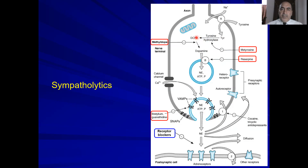The second step, from DOPA to dopamine, is inhibited by the drug alpha-methyl-DOPA. The storage of norepinephrine into the vesicle is inhibited by the drug reserpine. Finally, norepinephrine needs to be released from the nerve ending — guanethidine and bretylium can inhibit the release of norepinephrine from the nerve ending.